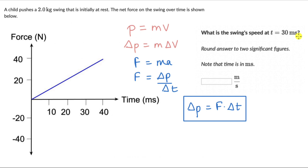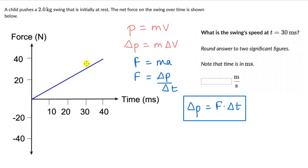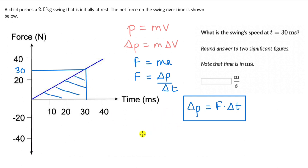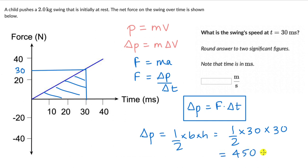Looking at the graph, the force is increasing with time, which means there will be a constant change in speed of the swing. We need to look at the area up to 30 milliseconds. At the 30 ms mark, we can estimate the force is approximately 30 Newtons on the Y-axis, in between 20 and 40. So if we find the area of this triangle, that gives us delta P: half times base times height, which is half times 30 times 30, giving us 450 Newton-milliseconds.